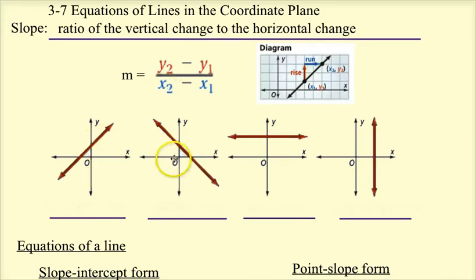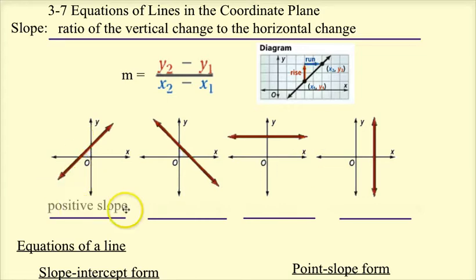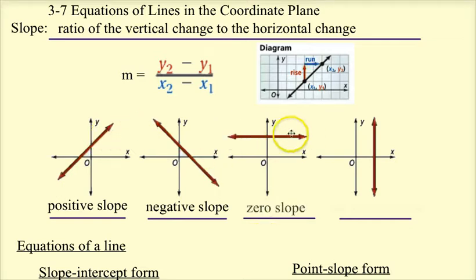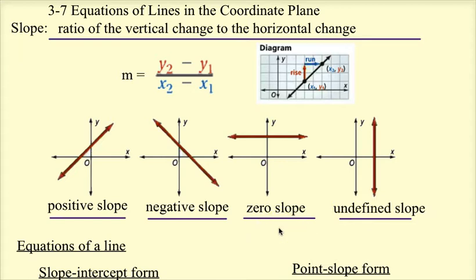Below we have four different examples of slope. If the line starts down and goes up, that's a positive slope. If it starts up high and goes down, that's a negative slope — slope describes how steep the line is. If the line is horizontal, that's a zero slope, and if the line is vertical, that's called an undefined slope or no slope.